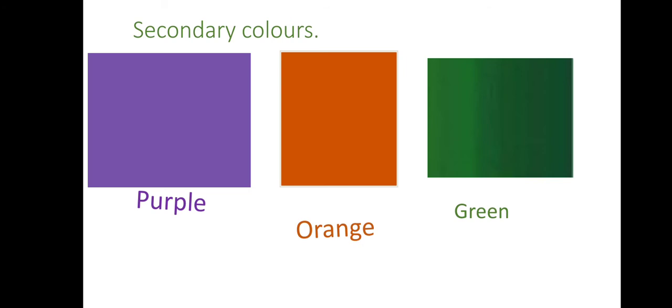Now look at the secondary colors that we have here. We have purple, we have orange, and green. I believe you can spell them: purple, P-U-R-P-L-E purple; O-R-A-N-G-E orange; green, green, green. So we have purple color, orange and green. These three colors are secondary colors.